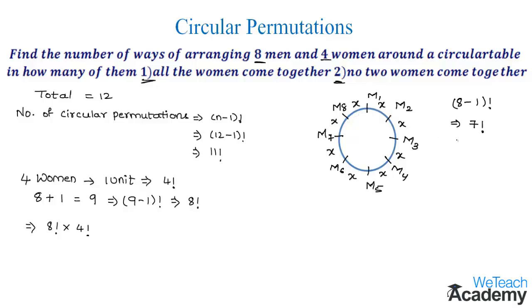In these places we can arrange four women in how many ways? We can arrange these four women in these places in 8P4 ways. That implies the total number of ways would be seven factorial into 8P4.